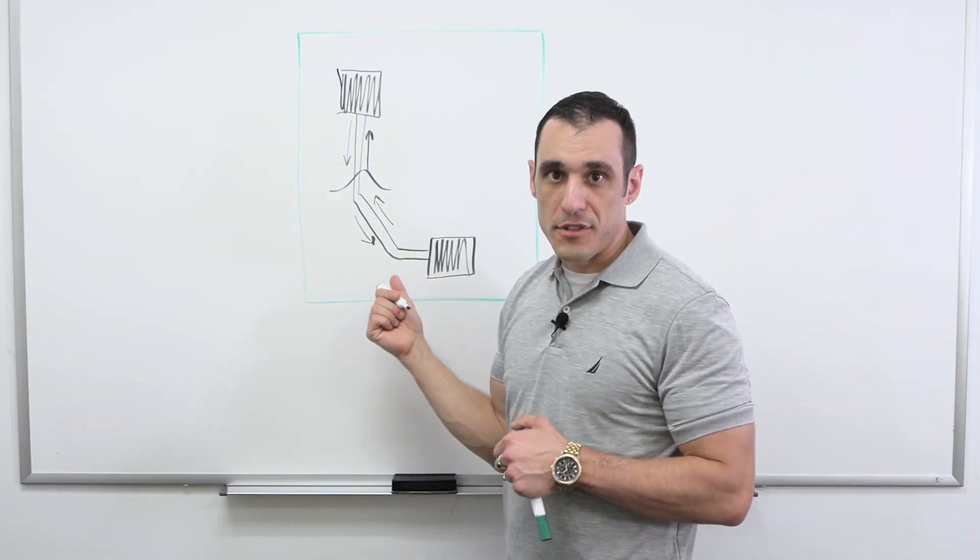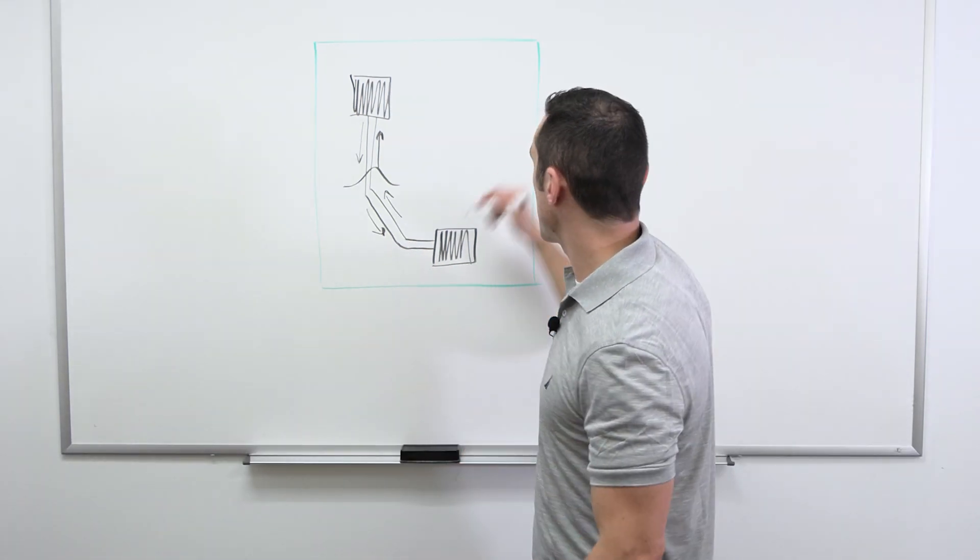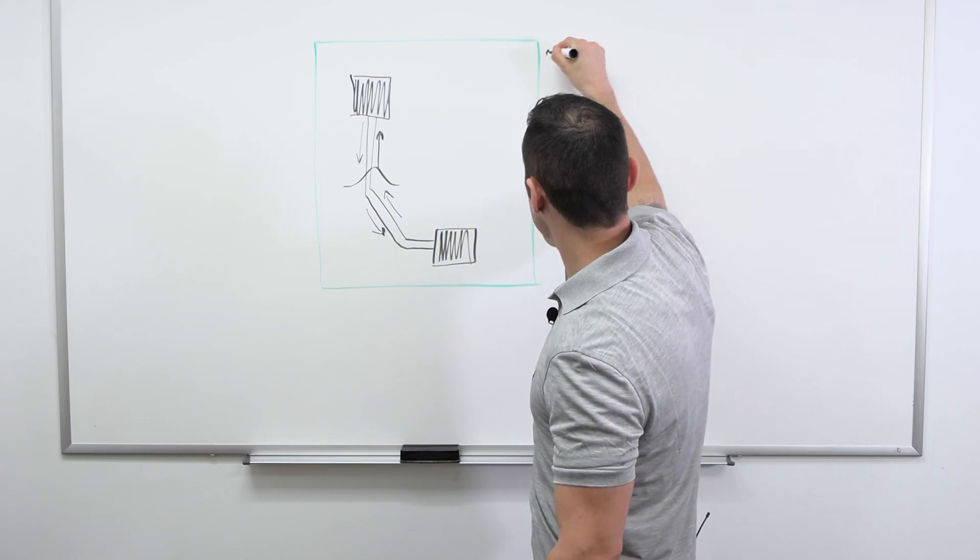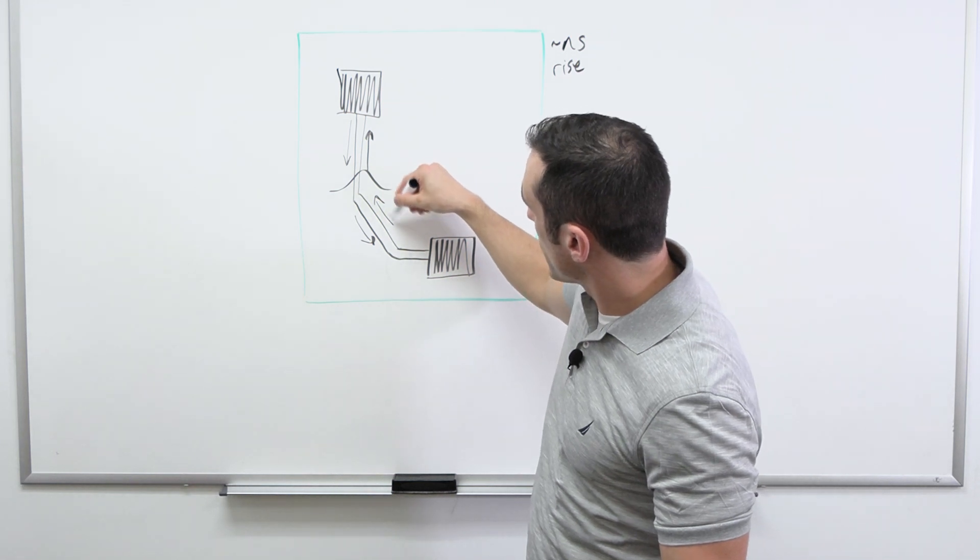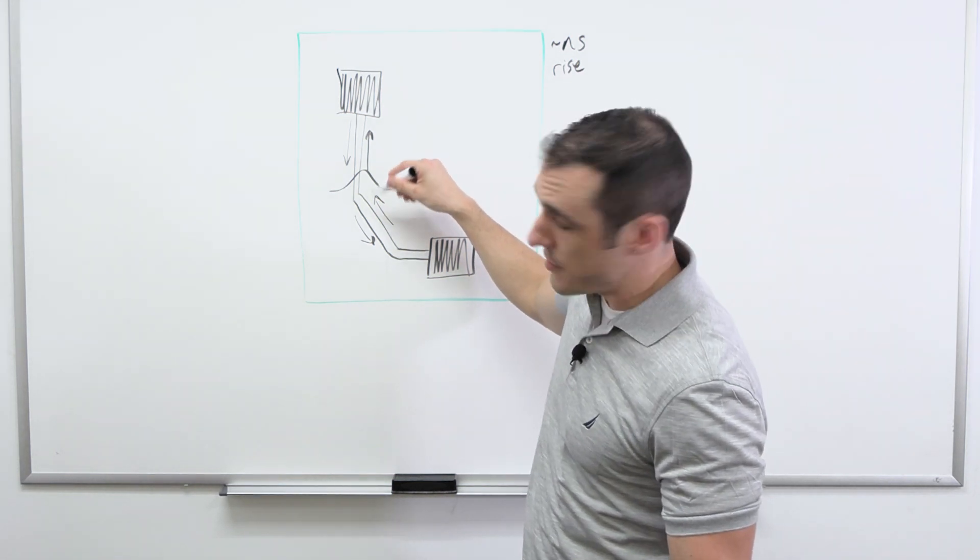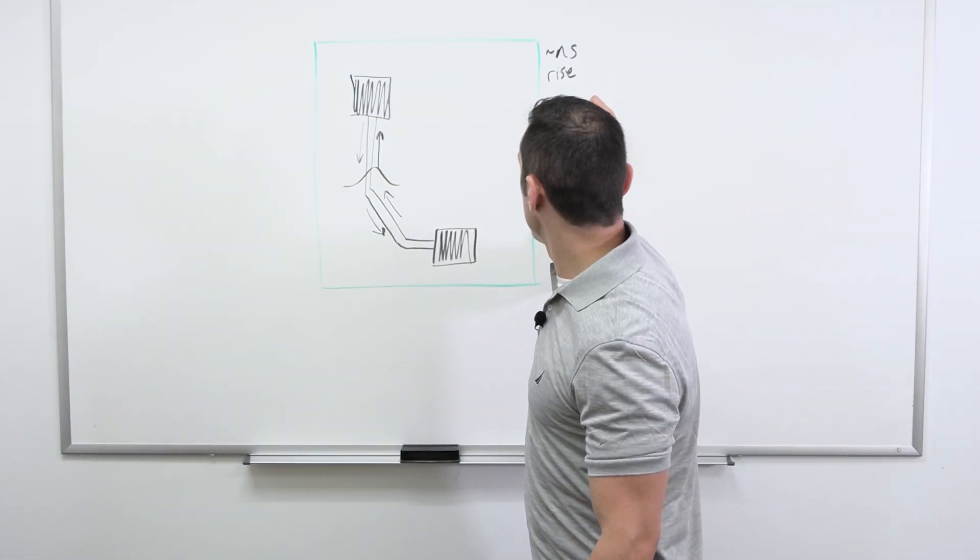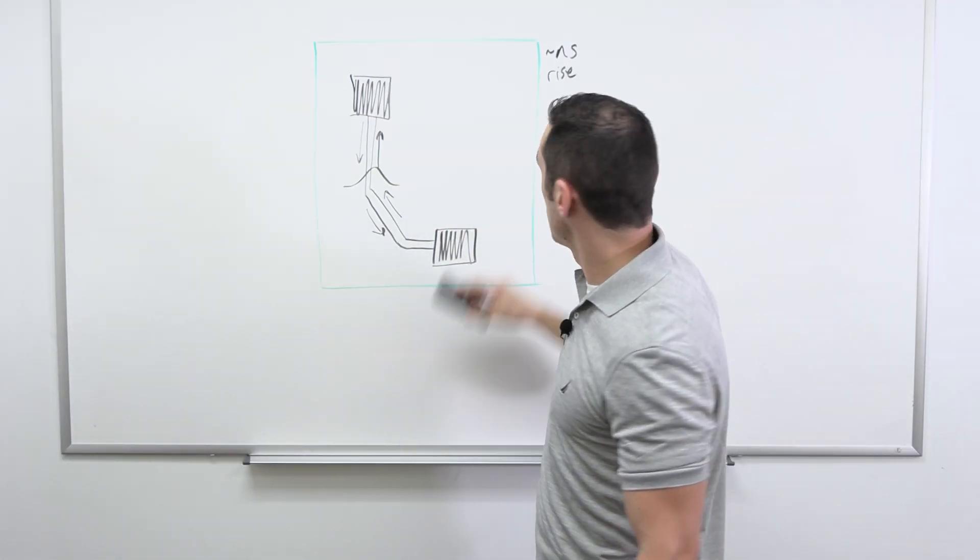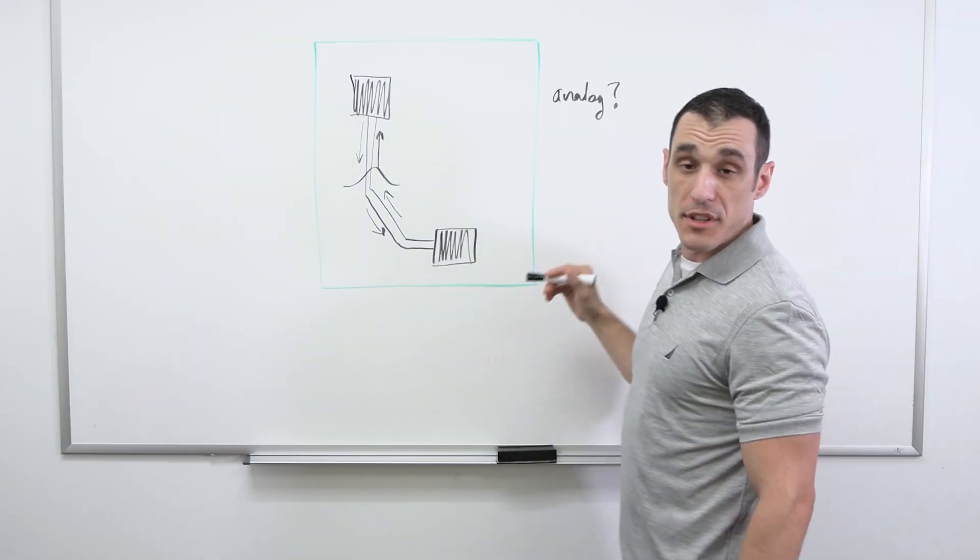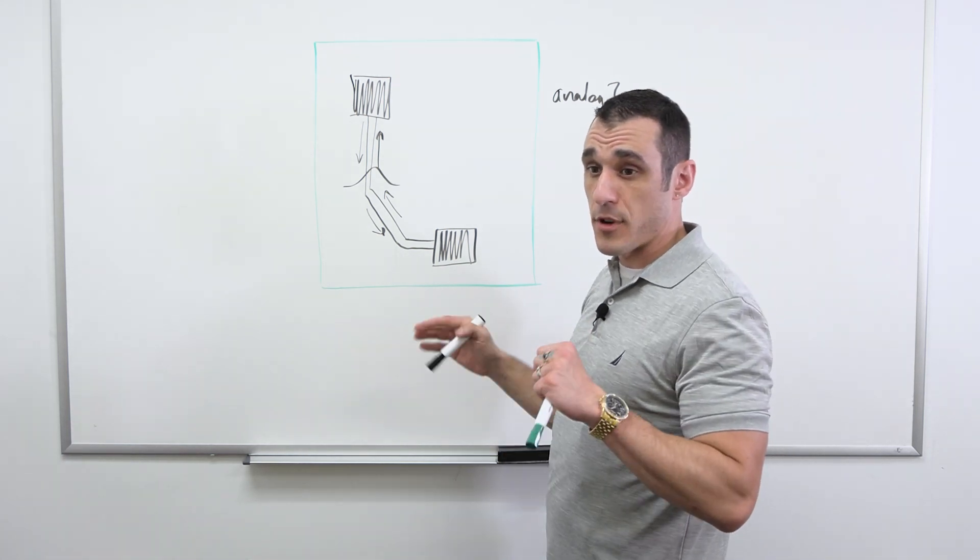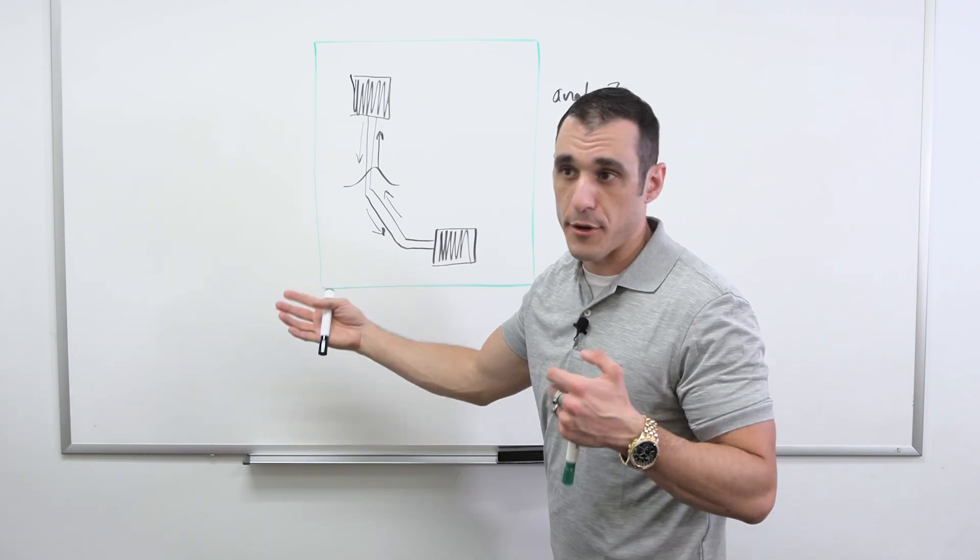This is generally what happens with a digital signal. Modern digital signals running at nanoseconds rise times tend to get induced in the ground plane pretty close to the trace. What happens though if we have, instead of a nanosecond rise time digital signal, an analog signal? This is where we have to look at the frequency. With digital signals the power spectrum spans from essentially DC all the way up to very high frequencies and theoretically out to infinity. With an analog signal that's not the case.